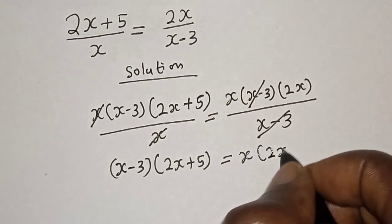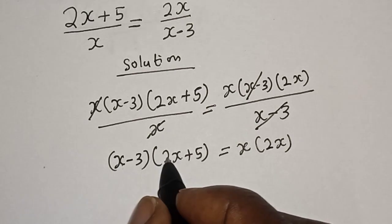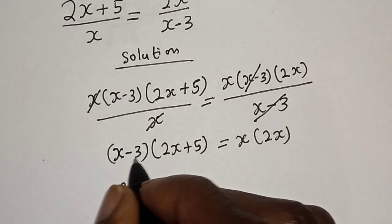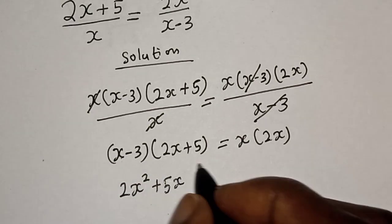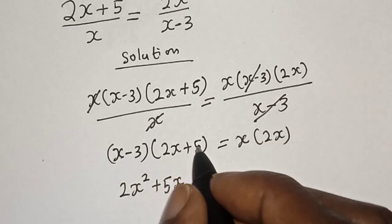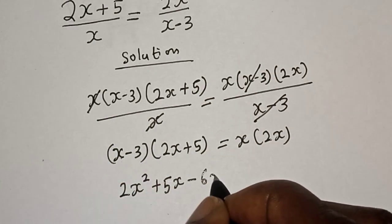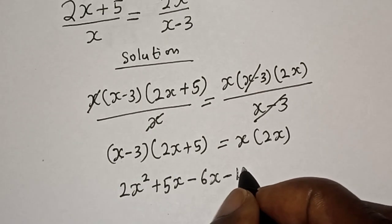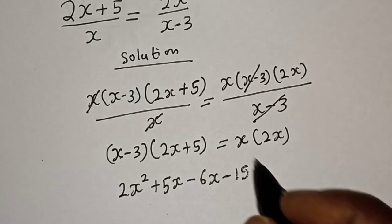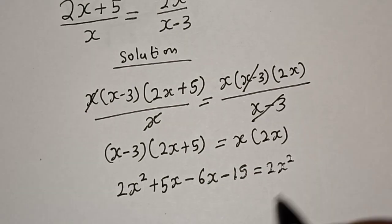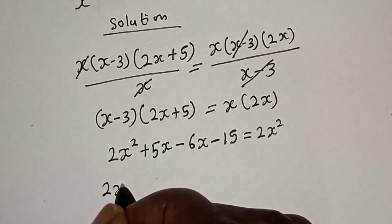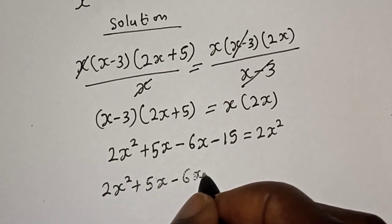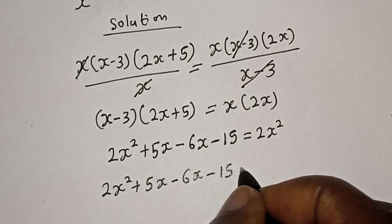Now let's multiply out. s times 2s gives 2s squared, plus s times 5 gives 5s, minus 3 times 2x gives minus 6x, minus 3 times 5 gives minus 15, and this is equal to s times 2s which is 2s squared. So we have 2s squared plus 5s minus 6x minus 15 equals 2s squared.